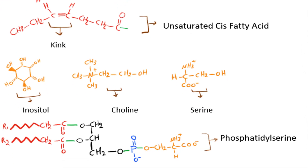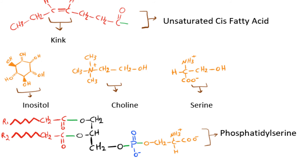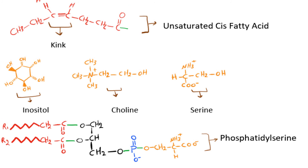The third part of the phosphoglyceride is the phosphate group, and the last part is the identity molecule or polar head group. The alcohol in the phosphate group interacts with the identity molecule to produce a different phosphoglyceride. The identity of the head group is what determines the name and properties of the phosphoglyceride. Common polar head groups for the glycerol backbone are inositol, choline, and serine.